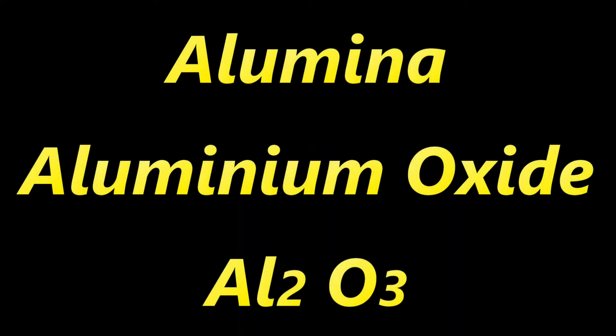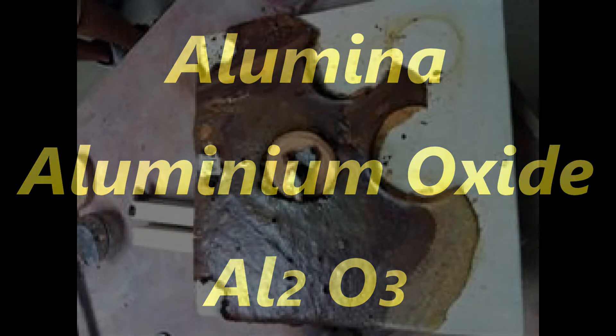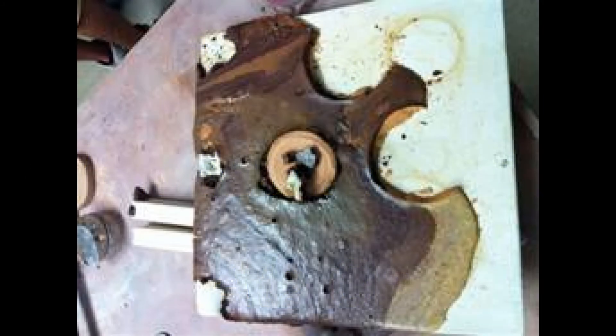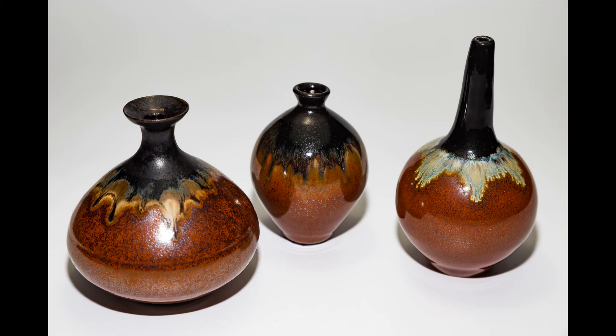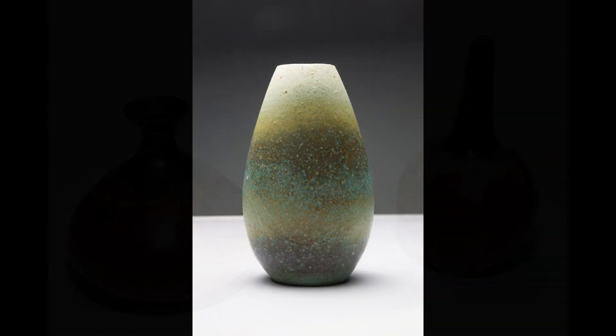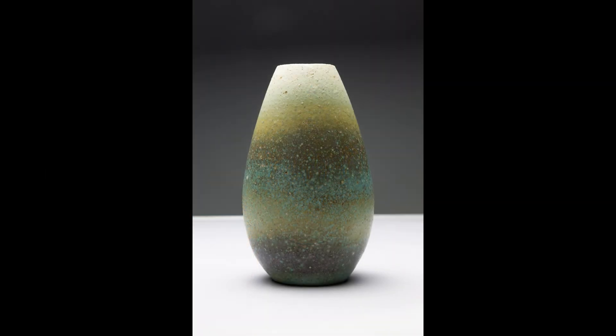The third component of the glaze is the stabiliser. Generally this is alumina, or aluminium oxide. Without a stabiliser the glaze actually melts and just runs straight off the clay body onto the kiln shelf. So what the stabiliser does is suspend the glaze components in the mix, and it alters the flow characteristics and also the final hardness of the glaze.